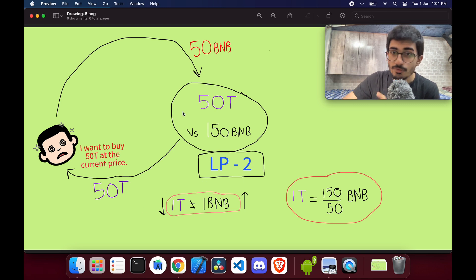What happens is these 50 tokens will have no value again, because the value was set because of the liquidity pool. If the liquidity pool isn't there, the tokens are worthless. So he removes the liquidity and he is left with 150 BNBs and 50 tokens. 50 tokens have no worth, but 150 BNB - he initially put in 100 BNB, now he has 150 BNB.